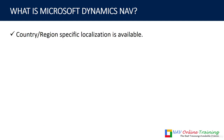Dynamics NAV has country and region specific localization. For example, if you are in India, Indian taxation and localization are available; if you are in the UK or the US, different localizations apply. You don't need to do custom development — you simply choose the localization and start using it.